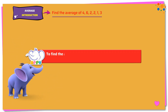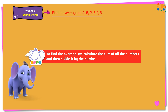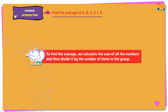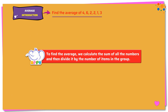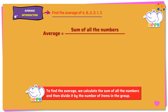To find the average, we calculate the sum of all the numbers and then divide it by the number of items in the group. We know that average equals sum of all the numbers by number of items in the group.